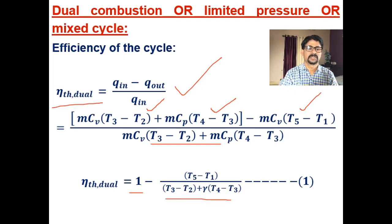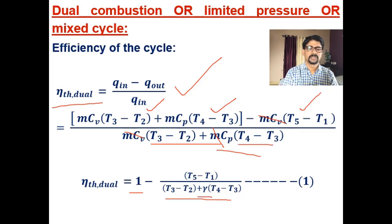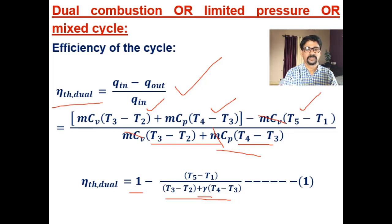Here m cancels, and when dividing all terms by Cv, the ratio Cp/Cv becomes γ applied to the (T4 − T3) term. This gives the expression for efficiency of the dual cycle in terms of temperatures at the five salient points T1 through T5.